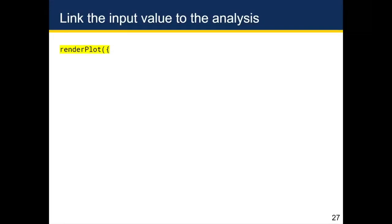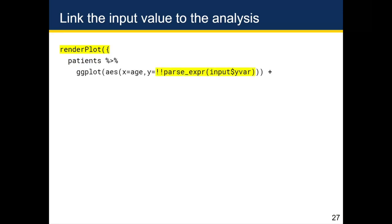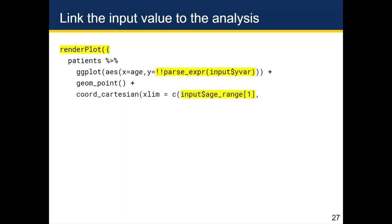Next we want to actually link the input value to the analysis. Ignoring the render_plot function for a second, we start with patients, pipe it to ggplot with aes(x = age, y = parse_expr(input$yvar)), plus geom_point, plus coord_cartesian with xlim = c(input$age_range[1], input$age_range[2]).